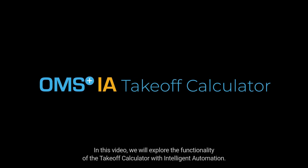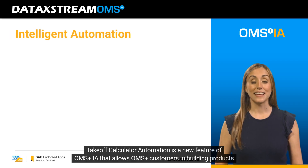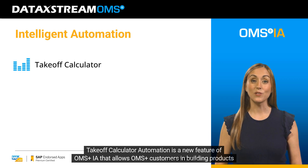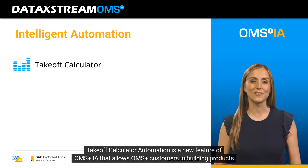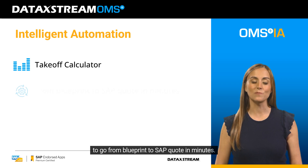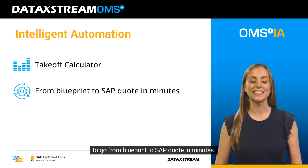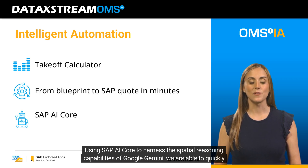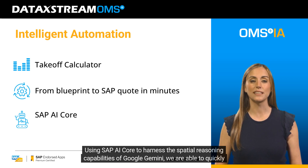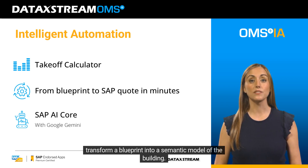In this video, we will explore the functionality of the Takeoff Calculator with Intelligent Automation. Takeoff Calculator Automation is a new feature of OMS plus IA that allows OMS plus customers in building products to go from blueprint to SAP quote in minutes. Using SAP AI Core to harness the spatial reasoning capabilities of Google Gemini, we are able to quickly transform a blueprint into a semantic model of the building.